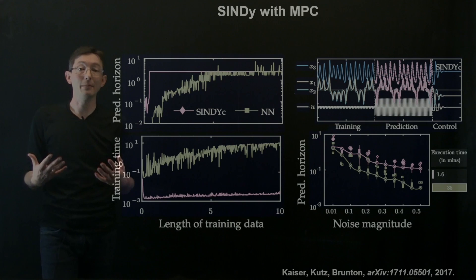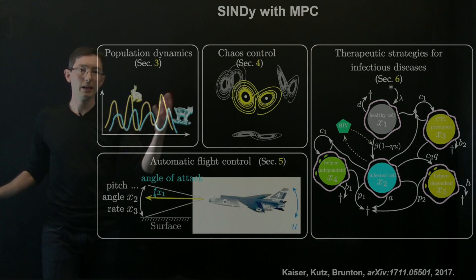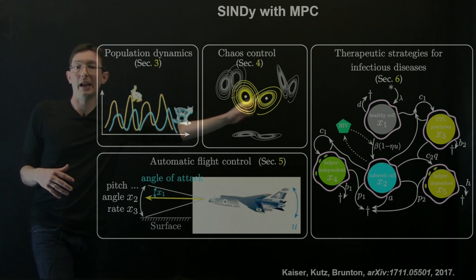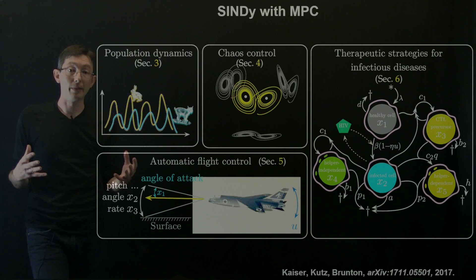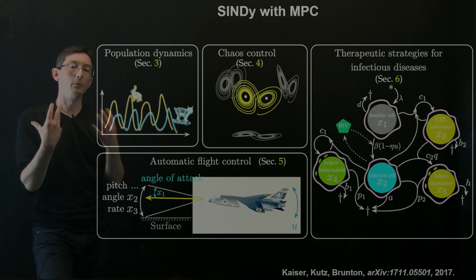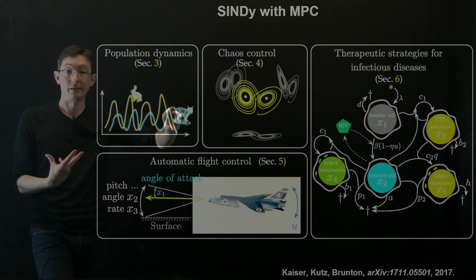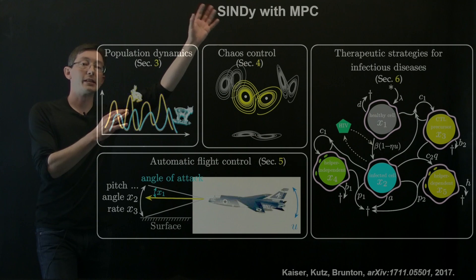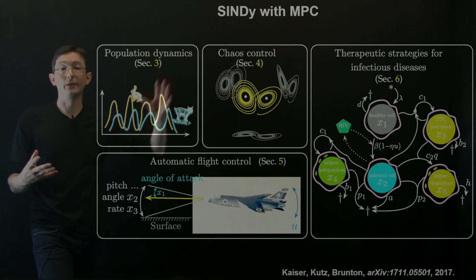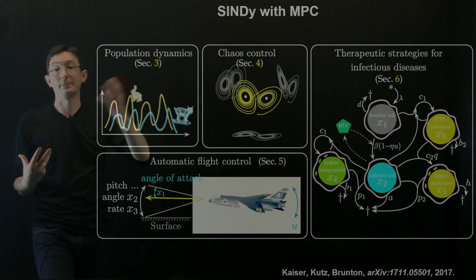Erika has applied this to many more systems: predator-prey, fighter jet, HIV, and Lorenz. You can read all about this and figure out how to apply it to your own system. Really, what you need to know is: if you have measurement data of the state of your system and the control input, you can build a SINDYc with control model. And if you have some control objective, you can achieve it by using model predictive control wrapped around that SINDYc model.